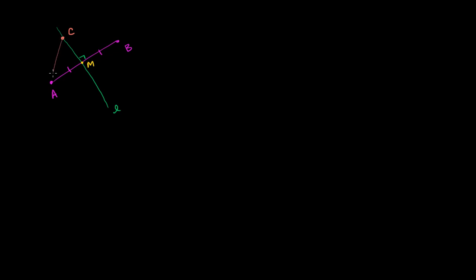So let me pick an arbitrary point on this perpendicular bisector. Let's call that arbitrary point C. So let's draw a triangle where we draw a line from C to A, and then another one from C to B. If we can prove that CA is equal to CB, then we've proven that C is an equal distance from A as it is from B.